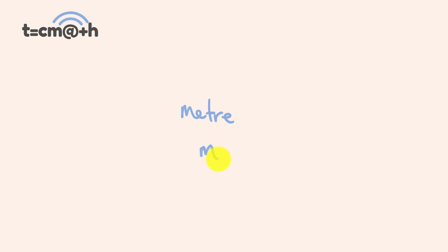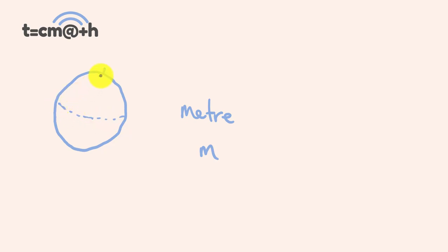So for the first type of units we're going to look at, we're going to look at length units. The most basic length unit we have in the metric system is the meter, which is written as an M. The meter was first defined back in the 1700s, where what they did is they got the North Pole and looked at the equator, basically divided it up 10 million times going through Paris, and the length they got was the meter.